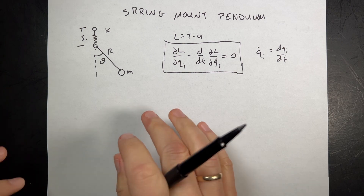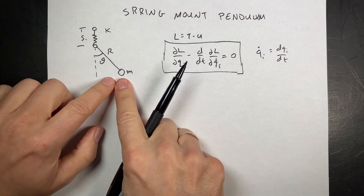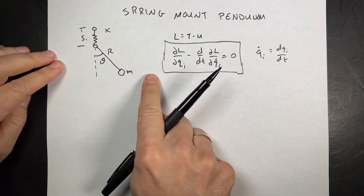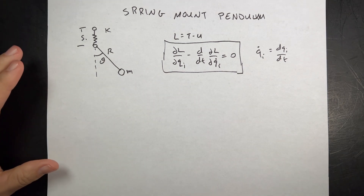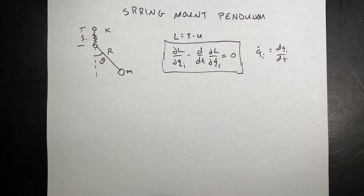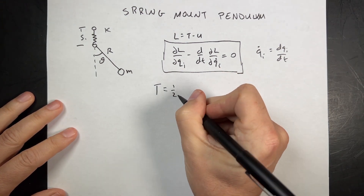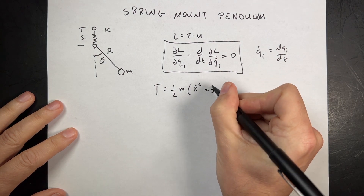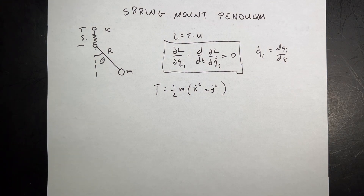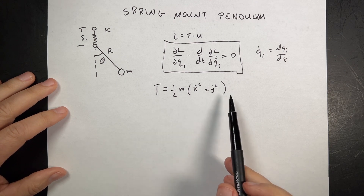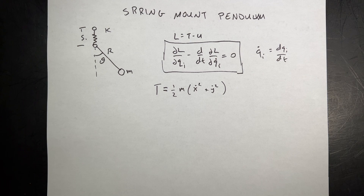One of the things we always have to worry about is the kinetic energy — how do I define the kinetic energy in terms of the angle theta and S? Because this can move up and down but it can also swing, so it's kind of complicated. I can't use polar coordinates because the pivot point isn't stationary. The answer is always to write things in terms of Cartesian coordinates, because in two dimensions T equals one-half m times (x-dot squared plus y-dot squared).